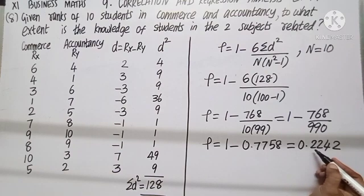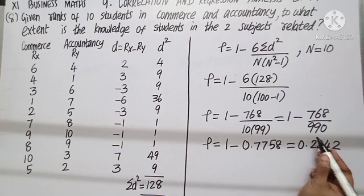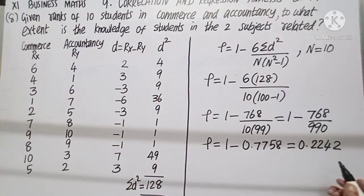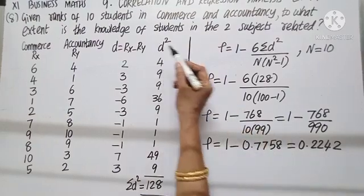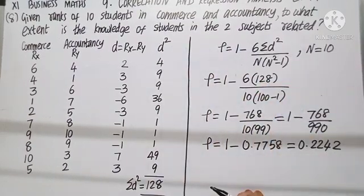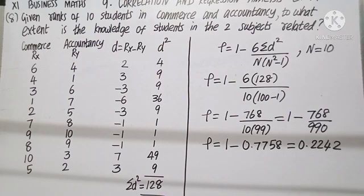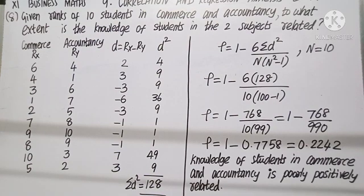Looking at the rho value, it is almost near 0. If it were near 1, we would say the knowledge of students is highly related. But since my value is almost near 0, we conclude the knowledge of students in commerce and accountancy is poorly positively related.